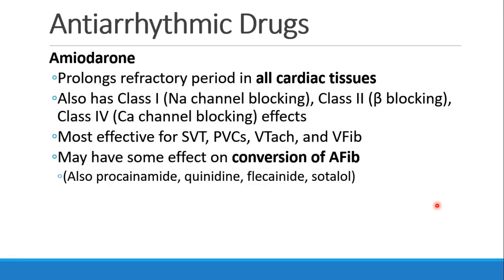Amiodarone is the class 3 drug you're most likely to encounter. Amiodarone is sort of a utility player — it actually prolongs refractory period in all cardiac tissues, which means it has class 1, class 2, and even some class 4 effects. So we see amiodarone used in the treatment of a wide variety of different arrhythmias, including supraventricular tachycardia, PVCs, V-tach, V-fib, and we see it on the ACLS guidelines.